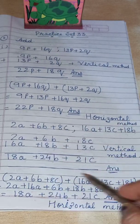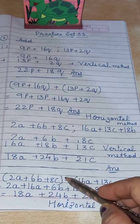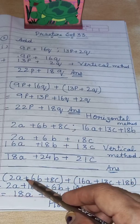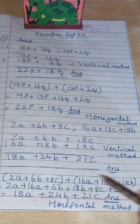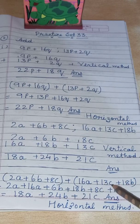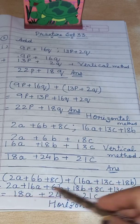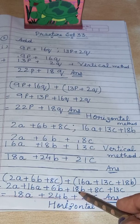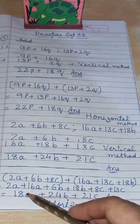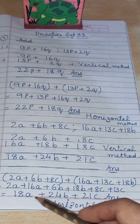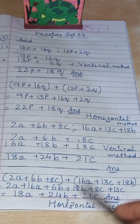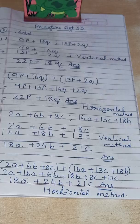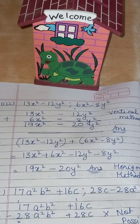Now arrange horizontally: put both trinomials in brackets, put a plus sign between them, open the bracket and bring like terms together — 2a and 16a, 6b and 18b, 8c and 13c. Then add: 2 plus 16 is 18, 6 plus 18 is 24, 8 plus 13 is 21. Don't forget to write the variables. Answer: 18a plus 24b plus 21c.